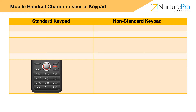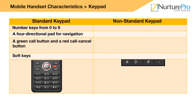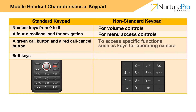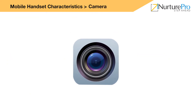Mobile keypads have also gone through several improvements over the years. Most standard mobile phones contain the following keys: number keys from zero to nine; some keypads also have three letters on most keys; star and hash or pound symbol keys; a four-directional pad for navigation; a green call button and a red call cancel button; soft keys. Non-standard keypads contain extra keys for volume controls, menu access, and controls to access specific functions such as keys for operating the camera.